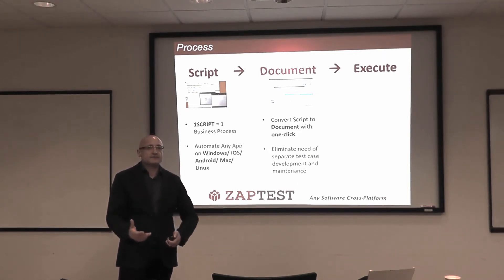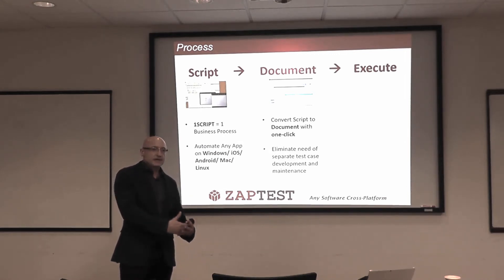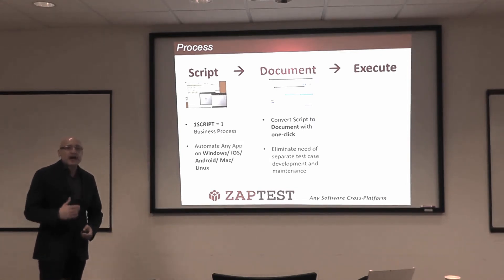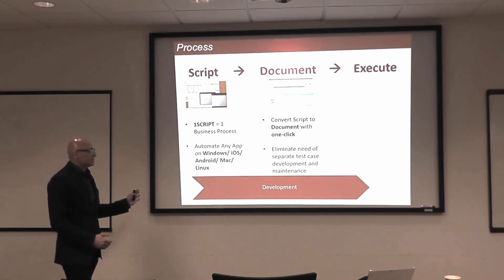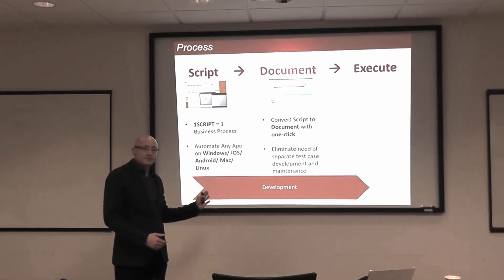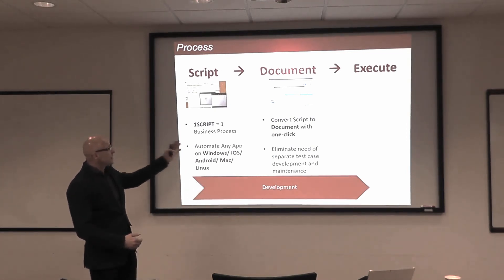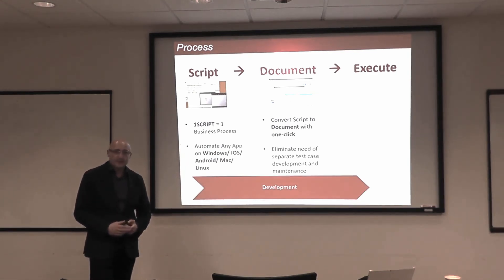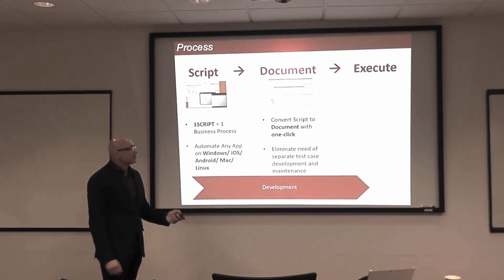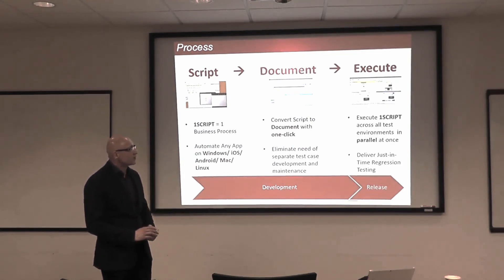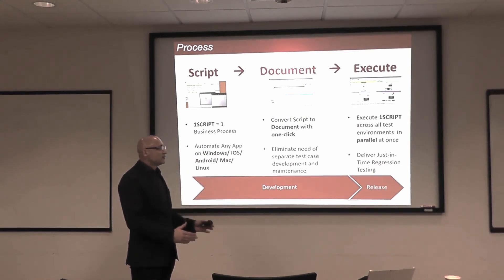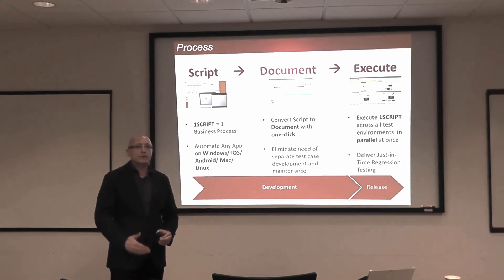One of the best practices is to build your testing and test automation compliant with the requirements. So if we operate in pure agile, it's going to be done during the development process. While development is building the feature set, we're already done with automation and documentation waiting for them at the gate. Once the application is ready to be tested, we can execute one script across all test environments in parallel at once. This way we deliver regression testing always just in time.